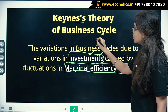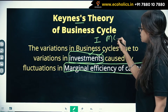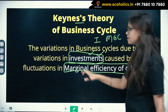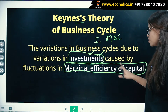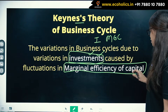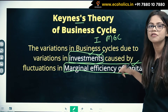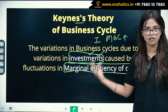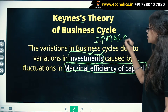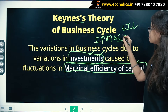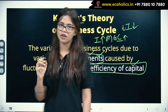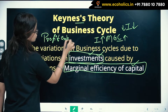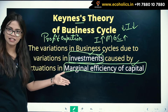Now, investments depend upon the MEC. When MEC is high, your capital is being used very efficiently. You are using your capital very efficiently. So when your MEC is high, the investor would want to invest — your investment is high. When MEC is low, investment is low. And MEC is basically your profit expectation.